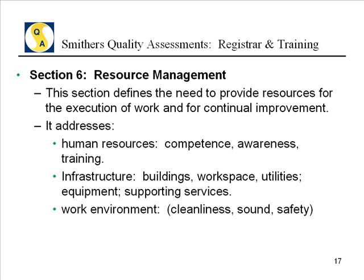Section 6 gets into what I'll loosely call the stuff that you make things with — the building, the facilities, the machinery, the products, tools, raw materials, components, and people. You've got to have the resources to make the ultimate product. Section 6 also involves the working environment, such as cleanliness and air standards.